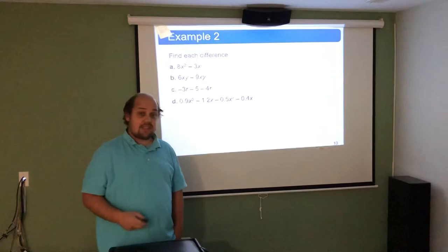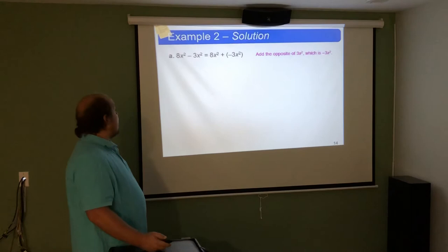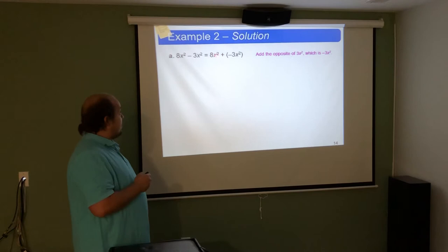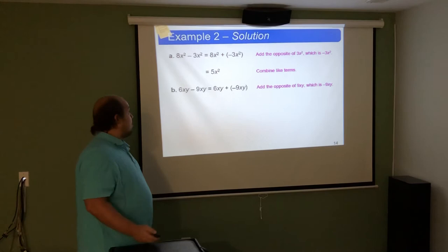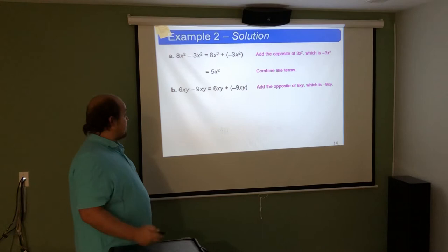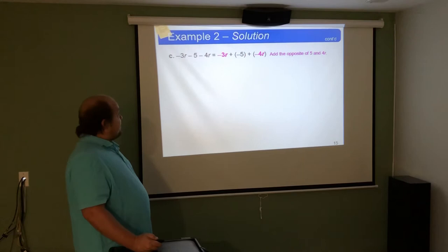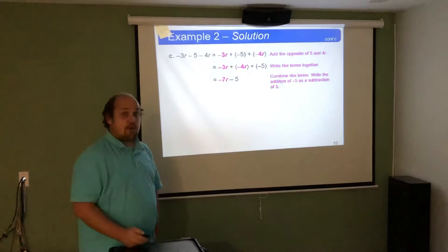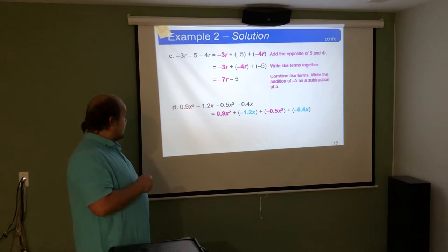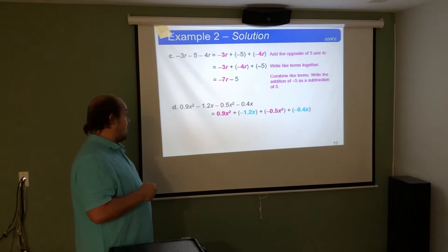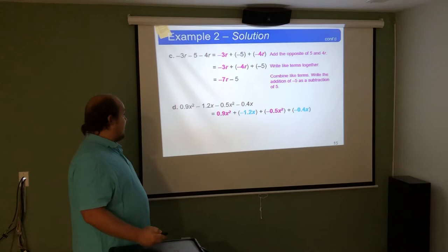When subtracting, it's the same general idea — just recognize the subtraction symbol and treat it as a negative. For 8x squared minus 3x squared, we take 8 minus 3 to get 5x squared. For 6xy minus 9xy, it's 6 minus 9 giving negative 3xy. For negative 3r minus 5 minus 4r, the like terms negative 3r and negative 4r combine to give negative 7r, keeping the negative 5 separate. For 0.9x squared minus 0.5x squared, 0.9 minus 0.5 gives 0.4x squared, and negative 1.2x combined with negative 0.4x gives negative 1.6x.